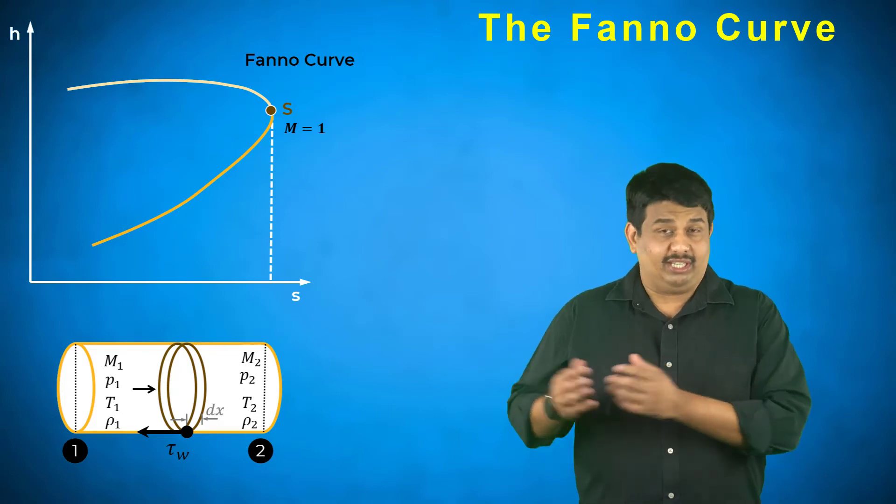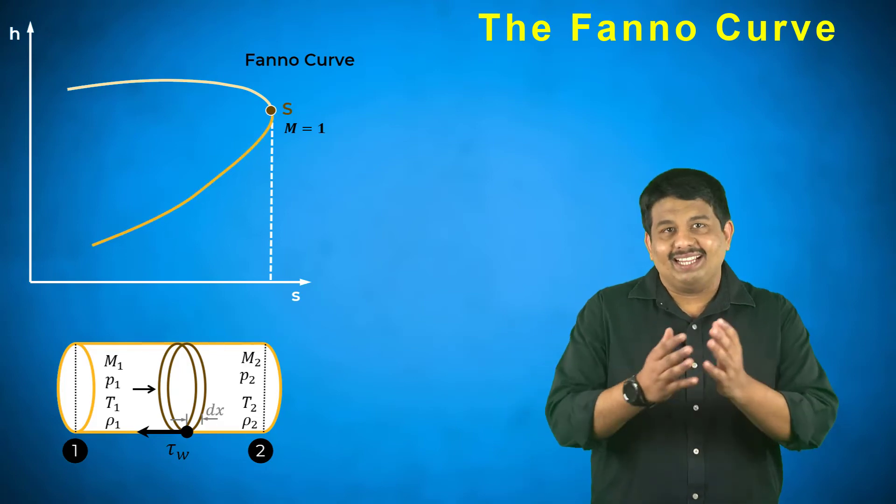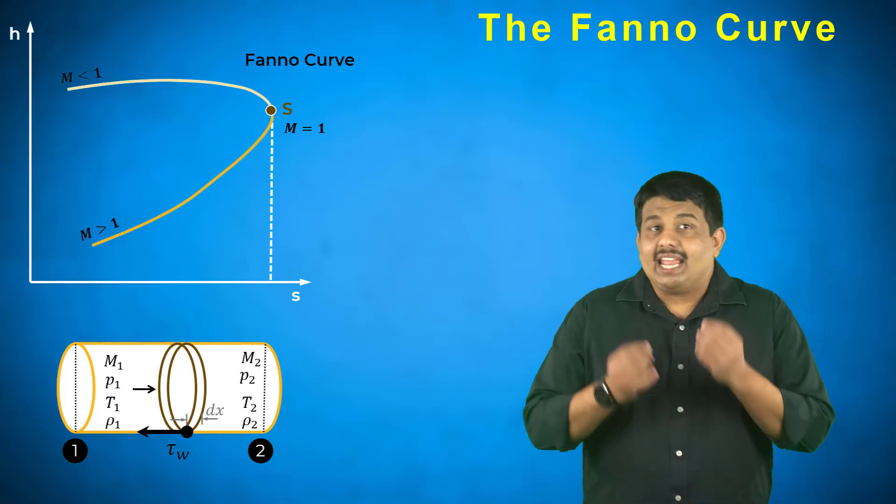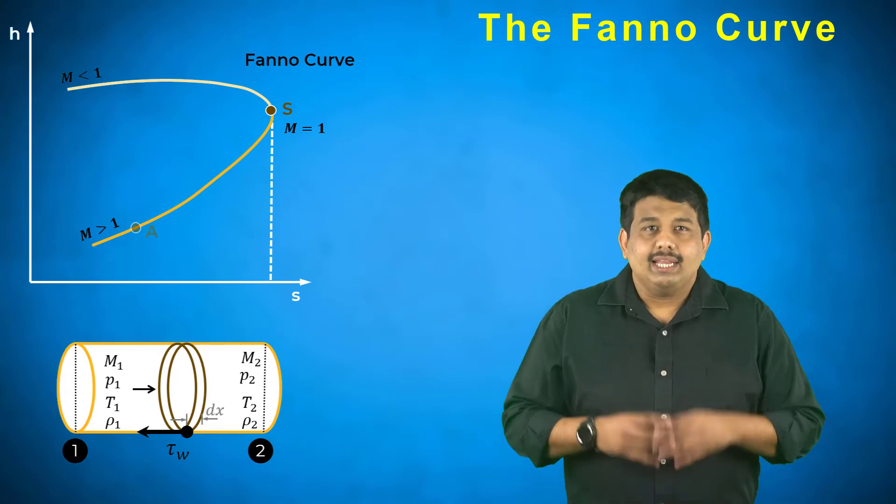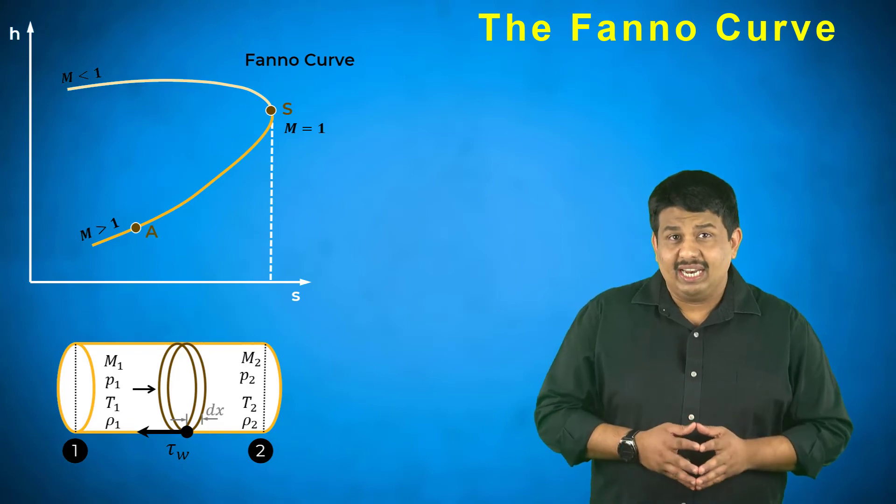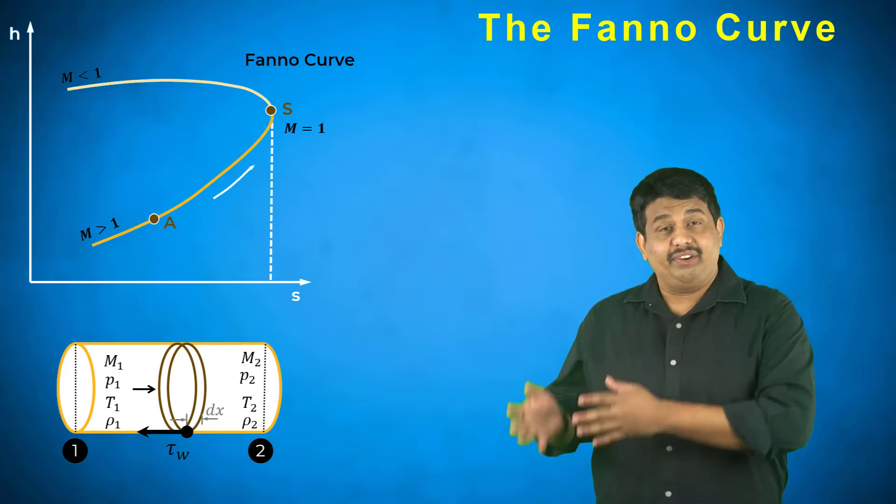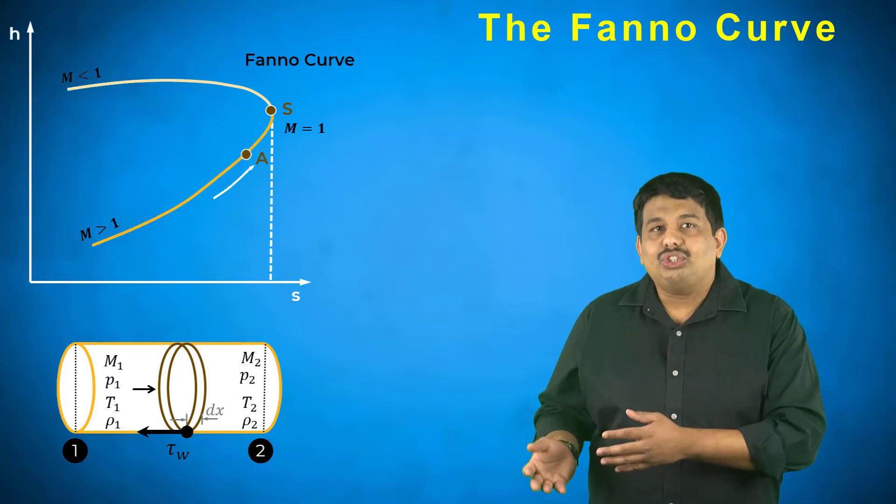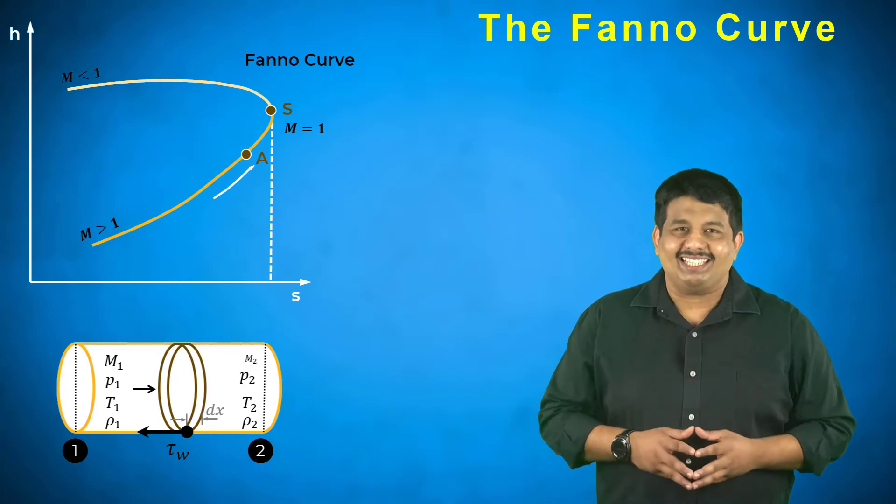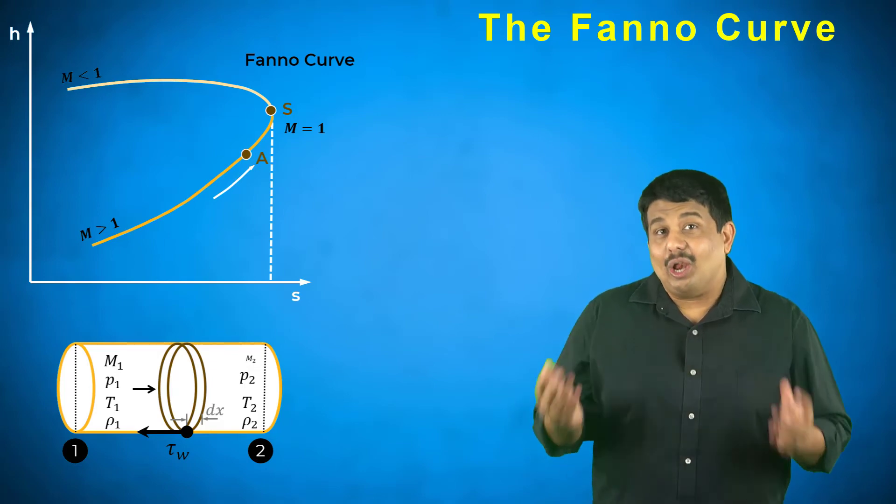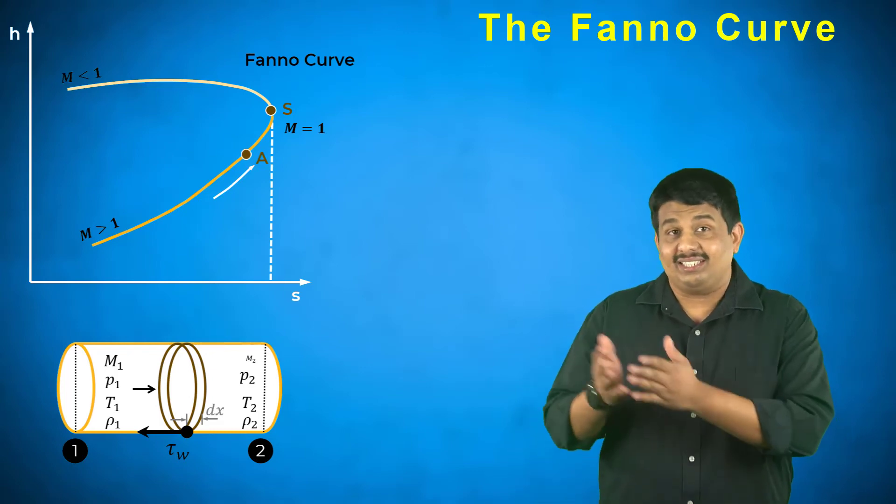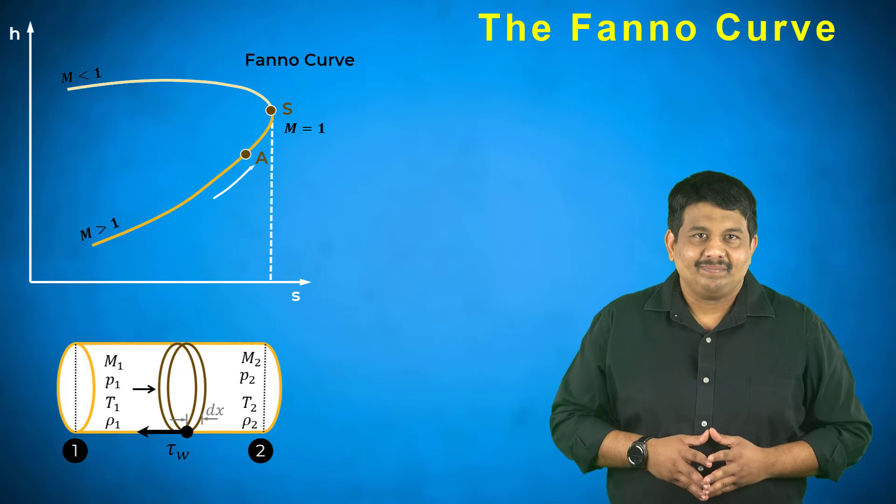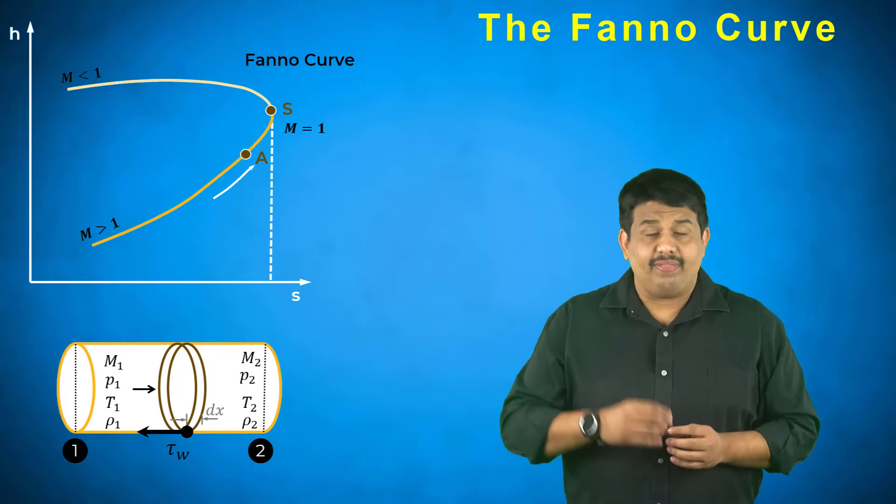The lower branch is supersonic and the upper is subsonic. If the inlet flow is supersonic as represented by point A, then the effect of friction decelerates the flow in region B and the downstream flow approaches point S. The longer the pipe, the greater the frictional loss, the closer the downstream conditions are to point S.